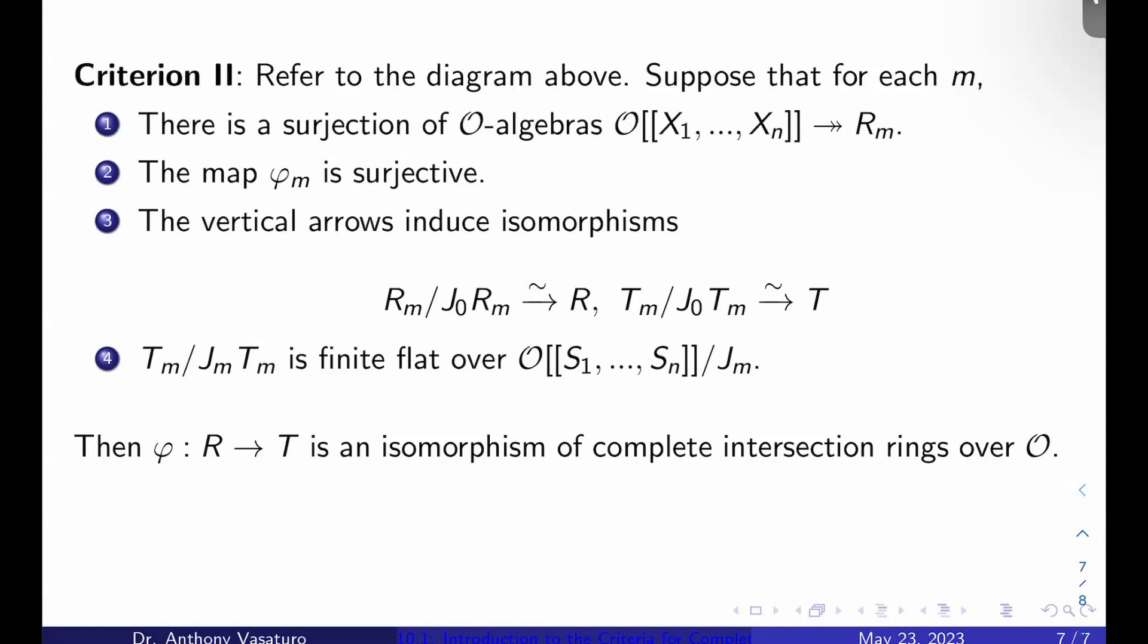And then also suppose that the vertical arrows in the square induce isomorphisms R_m mod J_0 R_m with R, and T_m mod J_0 T_m with T. And then lastly, we're going to want to assume that T_m mod J_m T_m is finite flat over O double bracket S_1 through S_n mod J_m. So slightly confusing, but this is what we want. Then φ from R to T is an isomorphism of complete intersection rings over O, which is what we're after here. We're trying to prove R equals T in general.